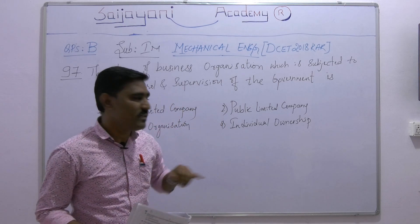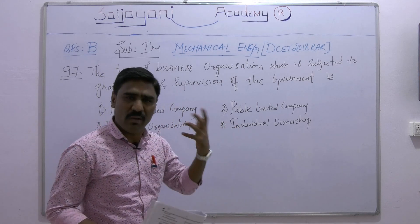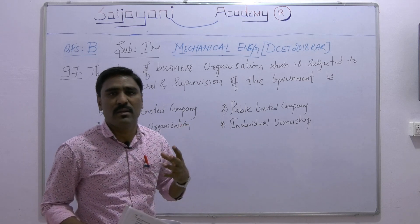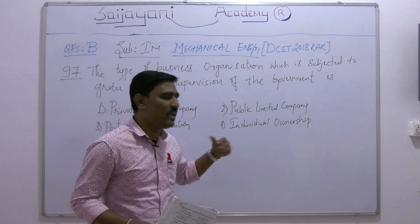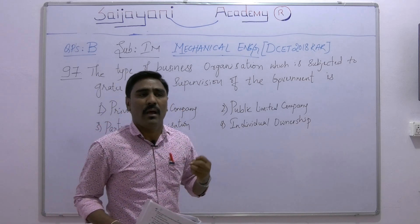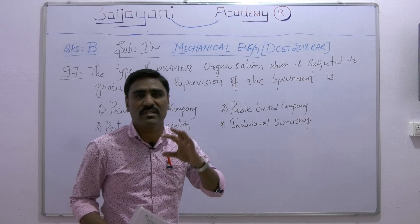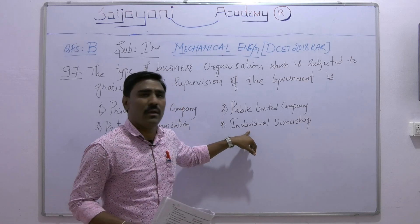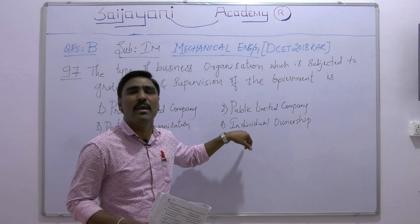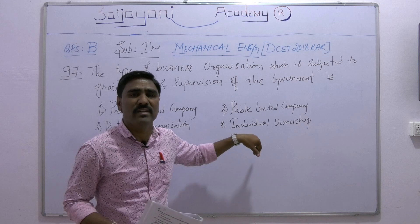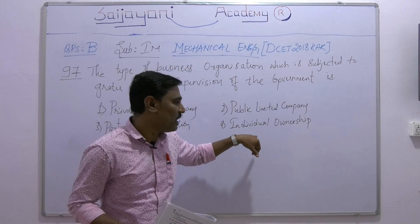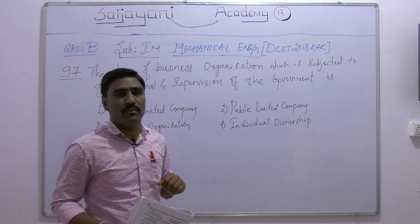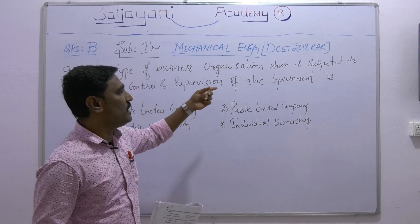Individual ownership means the ownership is carried out by only one person. Whatever the risks, rewards, losses, or profits, it is all taken by that individual alone — hence it is called individual ownership.